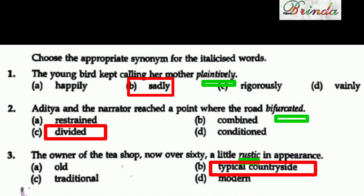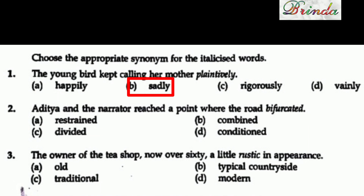Third question: 'The owner of the tea shop, now over 60, a little rustic in appearance.' The italicized word is 'rustic.' The options are old, typical countryside, traditional, modern. Rustic in appearance means 'grama pura' — typical countryside look. The answer is typical countryside.